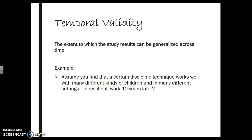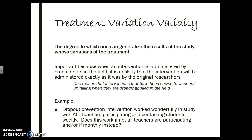Temporal validity has to do with time — looking at some sort of historical aspect to see if something that worked in the 1950s still works today. If you have a measure that was developed 20 years ago, do you still trust it? Maybe, maybe not. Treatment variation is a really interesting validity because we're asking: if you don't get the full treatment or if there are variations in the treatment, does it still work? Is it still accurate?